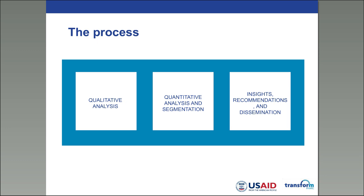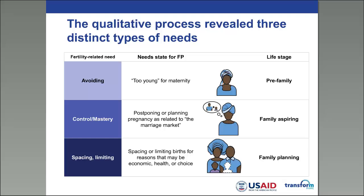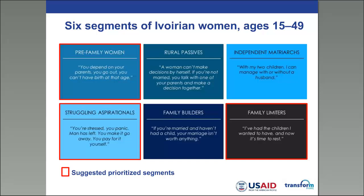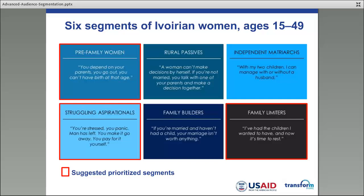The national demand analysis process included three components. First, a qualitative analysis — including a literature review, interviews, and focus group discussions mostly with women but also with men and healthcare providers. The qualitative analysis gave us interesting insights and also informed a quantitative questionnaire. The final part of the analysis was sharing the insights and recommendations with different stakeholders to validate the results and identify the ideal further recommendations. The qualitative analysis itself revealed that we can look at women in three different life stages: those avoiding pregnancy because they are still too young or not considering marriage; those who want to control or master contraception and control their pregnancy, called the family-aspiring women; and those who are planning their families, either limiting or spacing births.